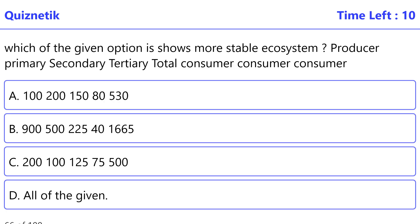Which of the given option shows more stable ecosystem? Producer primary, secondary, tertiary, total consumer, consumer, consumer. The correct option is B: 900, 500, 220, 540, 1665.